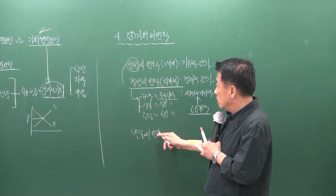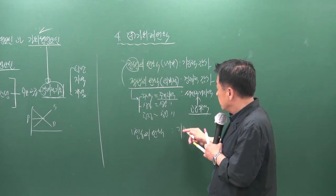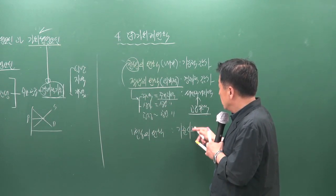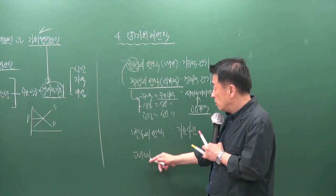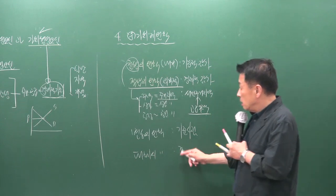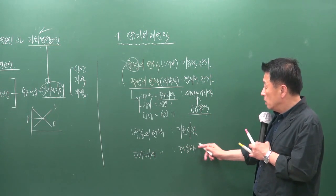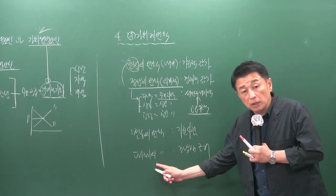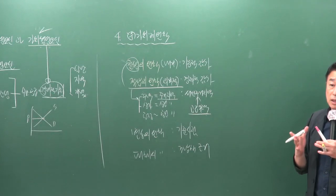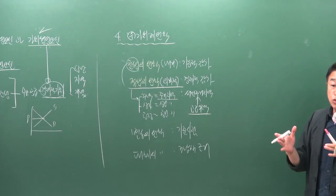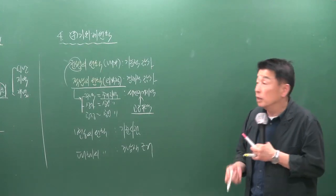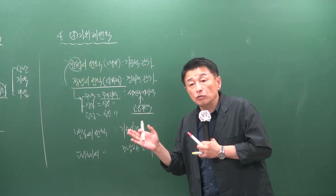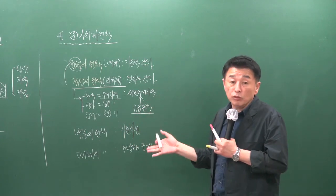변동의 원칙은 기준 시점의 근거가 됩니다. 대체 원칙은 비교 방식(산방식)의 근거가 되며, 반드시 둘 이상의 사례 부동산과의 비교를 통해 가치를 도출하도록 되어 있습니다. 13가지 원칙 중 균형, 적합, 변동, 대체 원칙은 기본적으로 정리해 두셔야 합니다.